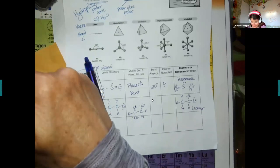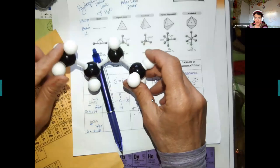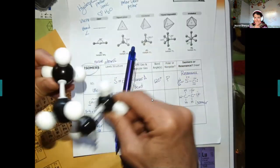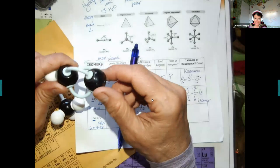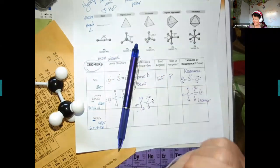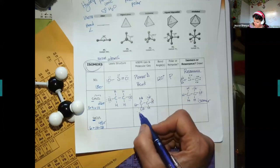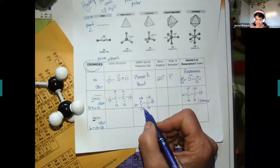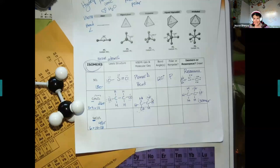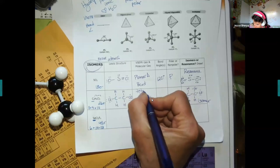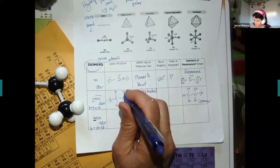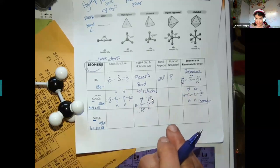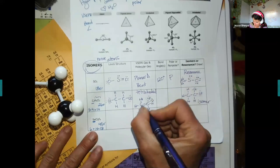Single bonds rotate freely — there are two electrons that are always moving and rotating. Triple bonds and double bonds have so many electrons they can't move; they're stuck in place. So if you show the chlorine up, down, or to the left, all of these positions in a tetrahedral are exactly the same thing. This is not an isomer.